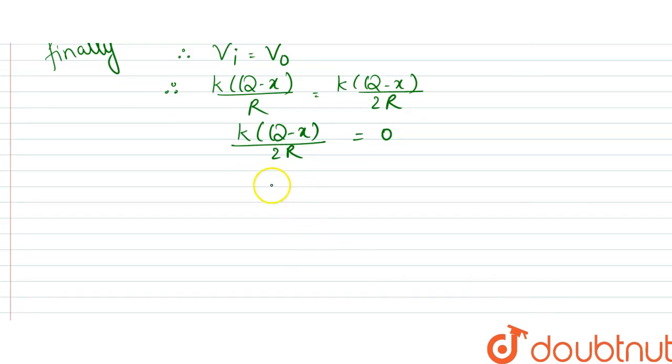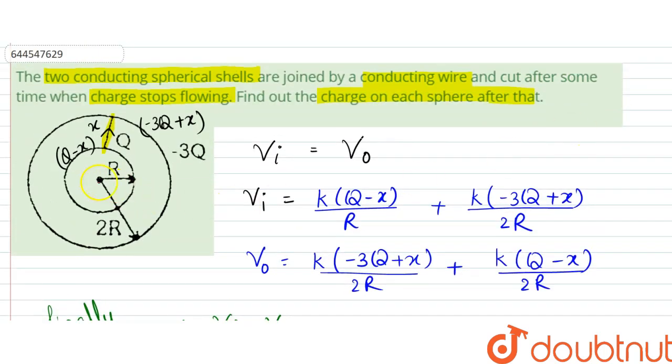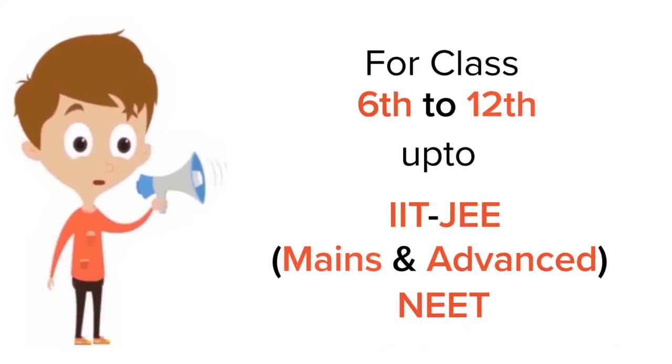So from here, Q would be equal to x. So all the charges will flow. So what we could say from that is that the final charge here on the inner shell would be 0, and here minus 3Q plus Q, so it would be minus 2Q. These are the answers.